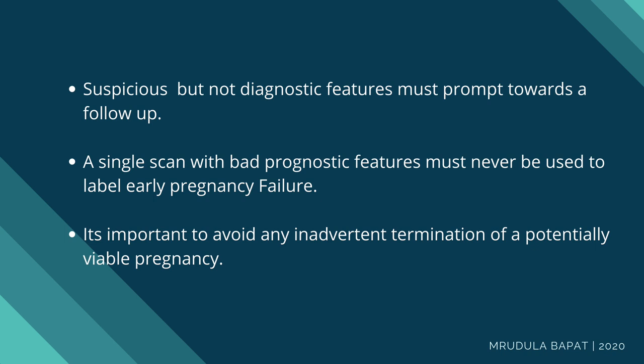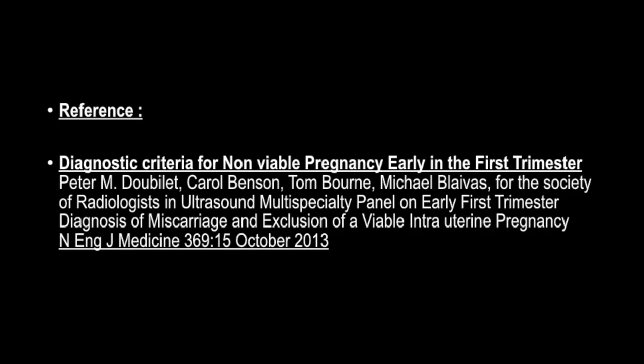Our aim and take-home message is that it is very important to avoid any inadvertent termination of a potentially viable pregnancy. It's important to take into account the sac size criteria, the crown-rump length criteria, and very importantly the time-based criteria to label a pregnancy as non-viable. Thank you for your kind attention.